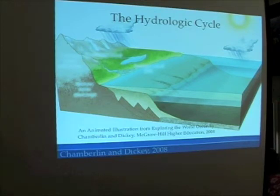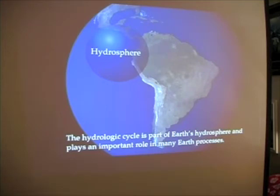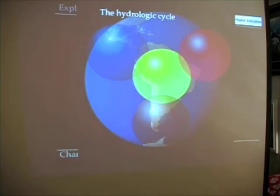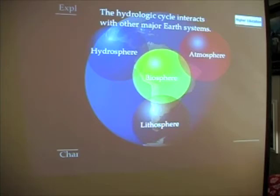This is an illustration from the book, again, in chapter 5. The hydrologic cycle is really part of Earth's hydrosphere. It plays an important role in many of Earth's processes. The hydrologic cycle interacts with other major Earth systems, such as the atmosphere, the biosphere, and the lithosphere — a term we encountered when we talked about plate tectonics.